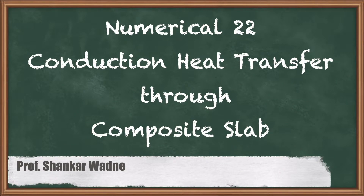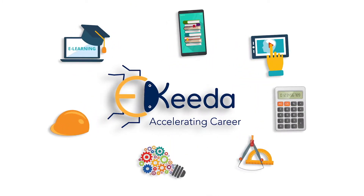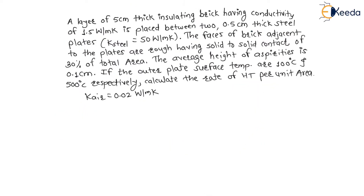Hello dear students. In this lecture we are going to see one best quality question on conduction through a composite slab. The question is: a layer of 5 cm thick insulating brick having conductivity of 1.5 W per meter Kelvin is placed between two 0.5 cm thick steel plates. Thermal conductivity of steel is 50 W per meter Kelvin.